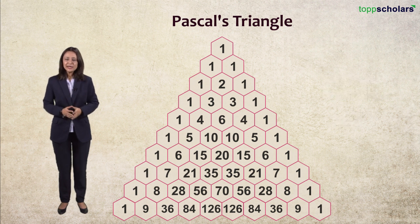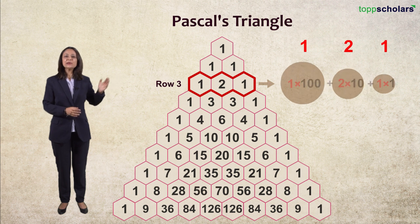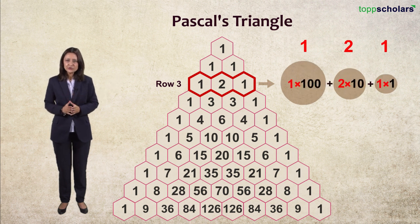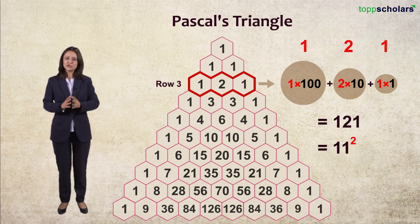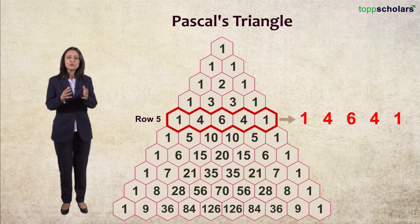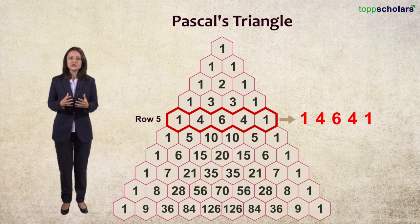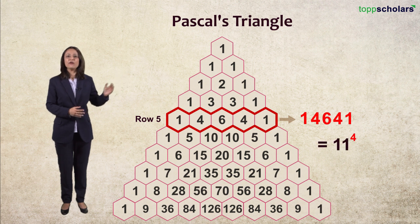For example, in row 3 we have 1, 2, and 1, which can be treated as 1×100 + 2×10 + 1×1 = 121, which is 11 squared. Now take a look at the fifth row, which has 1, 4, 6, 4, 1, which when written as a decimal expansion gives us 14,641, which is 11 raised to the power of 4.